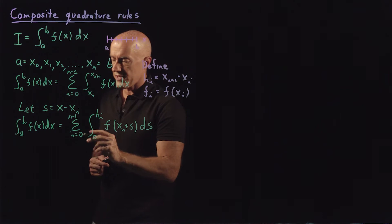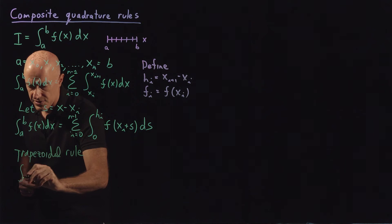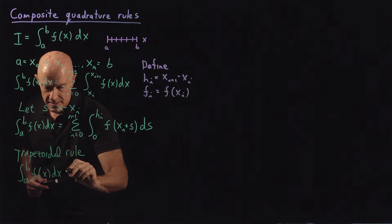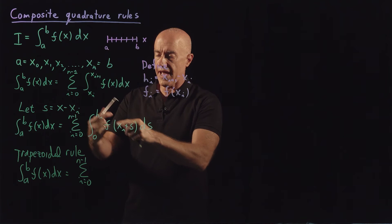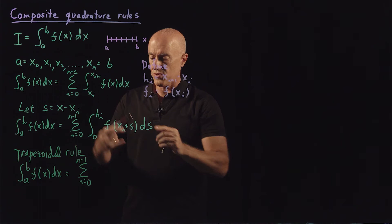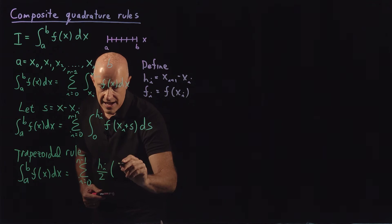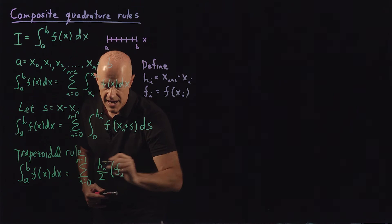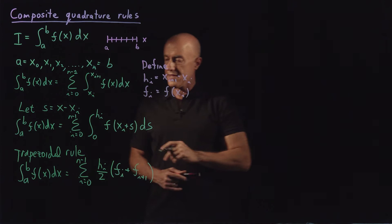If we apply the trapezoidal rule, which is very commonly used, we get the integral from a to b of f of x dx equals the sum from i equals 0 to n minus 1 of one-half hᵢ times the function at the two endpoints: fᵢ plus fᵢ₊₁. That's the composite quadrature rule using the trapezoidal rule.